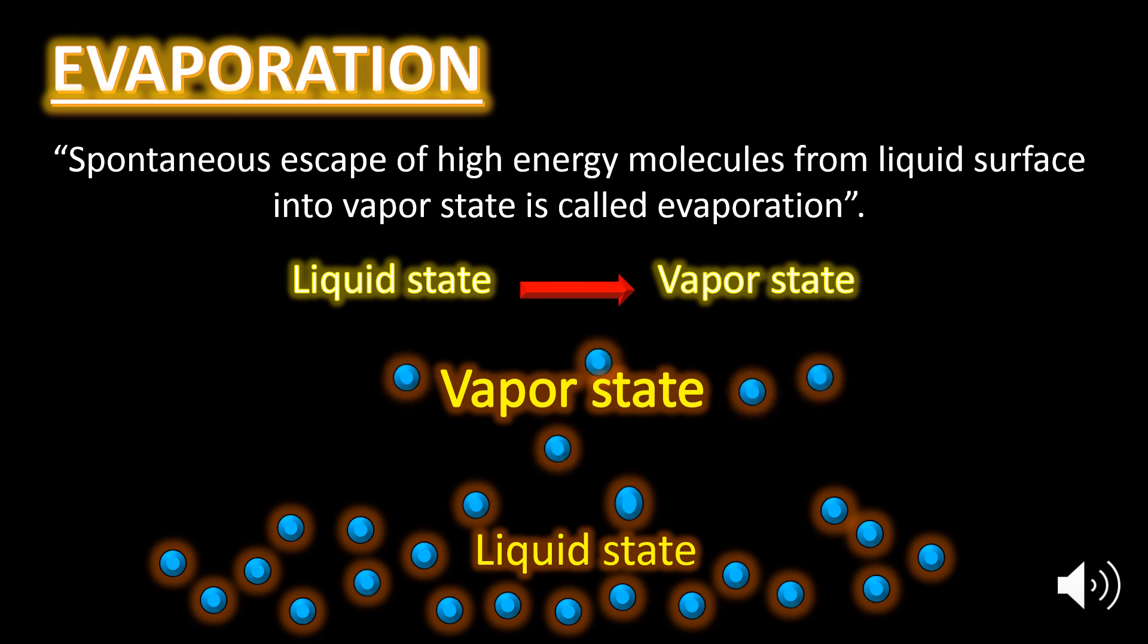All molecules in the liquid do not possess equal energies at any temperature, so they move with different velocities. When high energy molecules hit the molecules on the surface of the liquid, they give part of their energy to the surface molecules which become able to overcome the force of attraction and thus leave the liquid surface. In this way evaporation takes place.